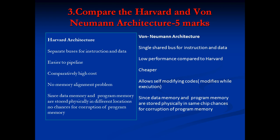Now we'll compare Harvard and Von Neumann architecture, asked for 5 marks. Harvard architecture has separate buses for instruction and data, making it easier to pipeline and giving comparatively high performance but higher cost. Von Neumann architecture uses a single shared bus for instruction and data, giving lower performance compared to Harvard but it is cheaper.